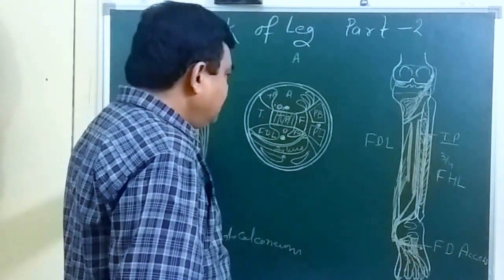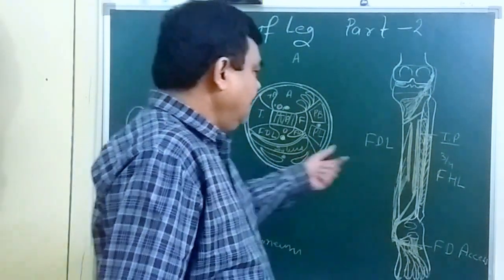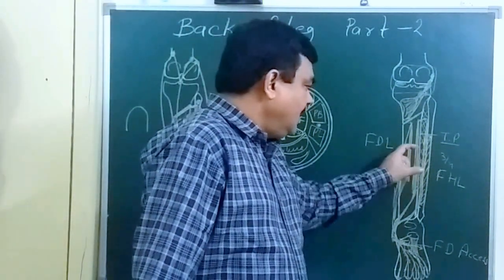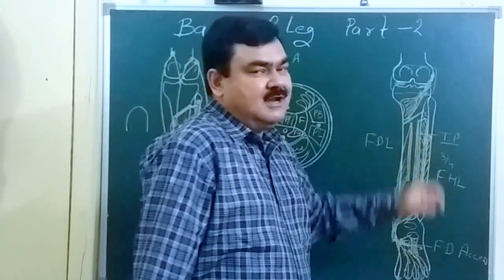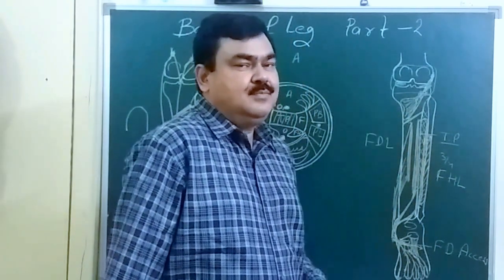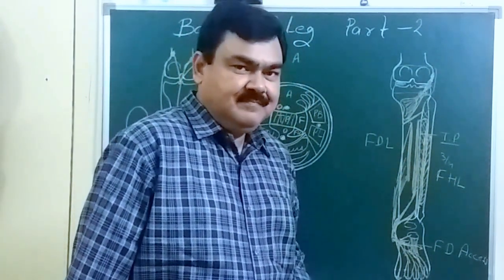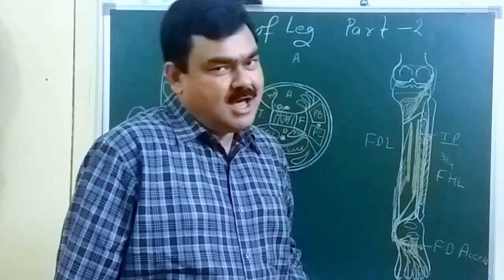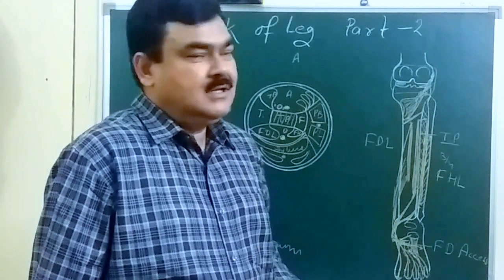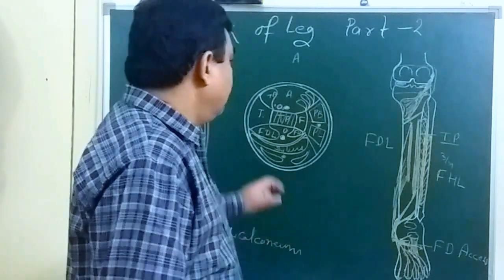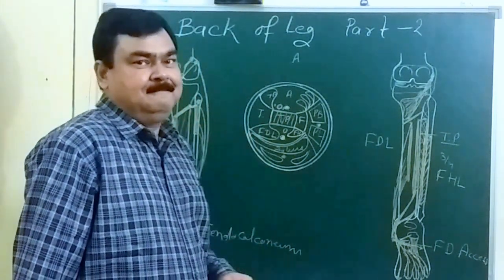So these are the superficial, intermediate, and deep muscles of the posterior compartment of the leg. This is all about the muscles of this region.